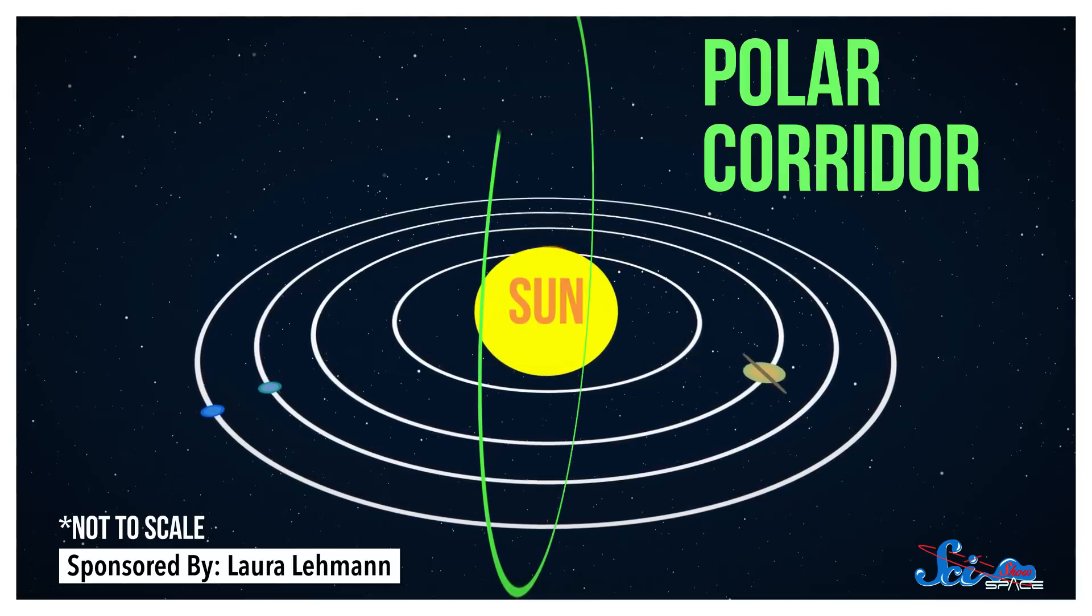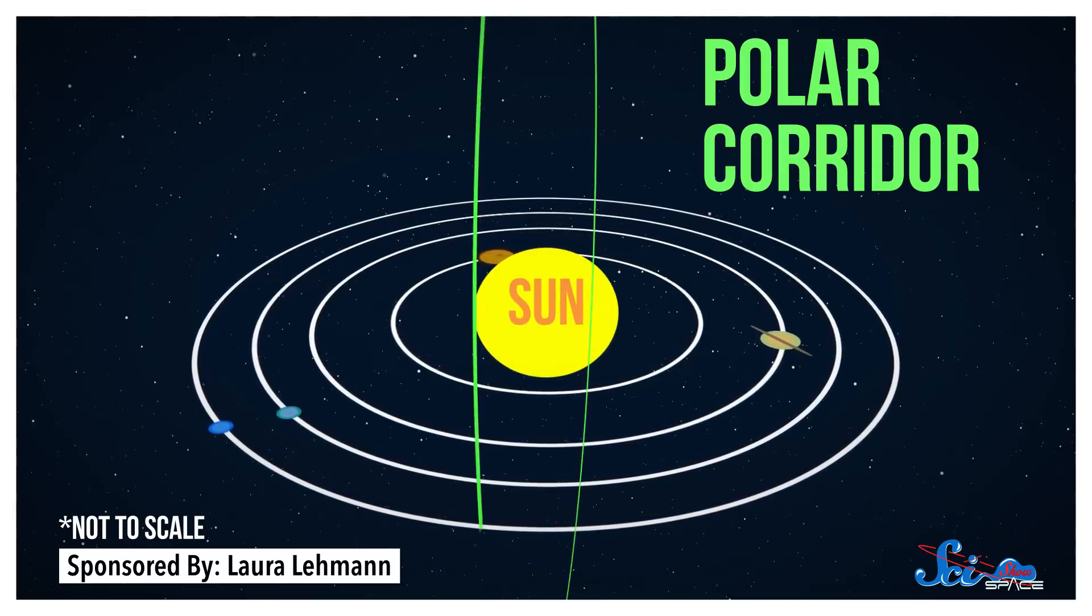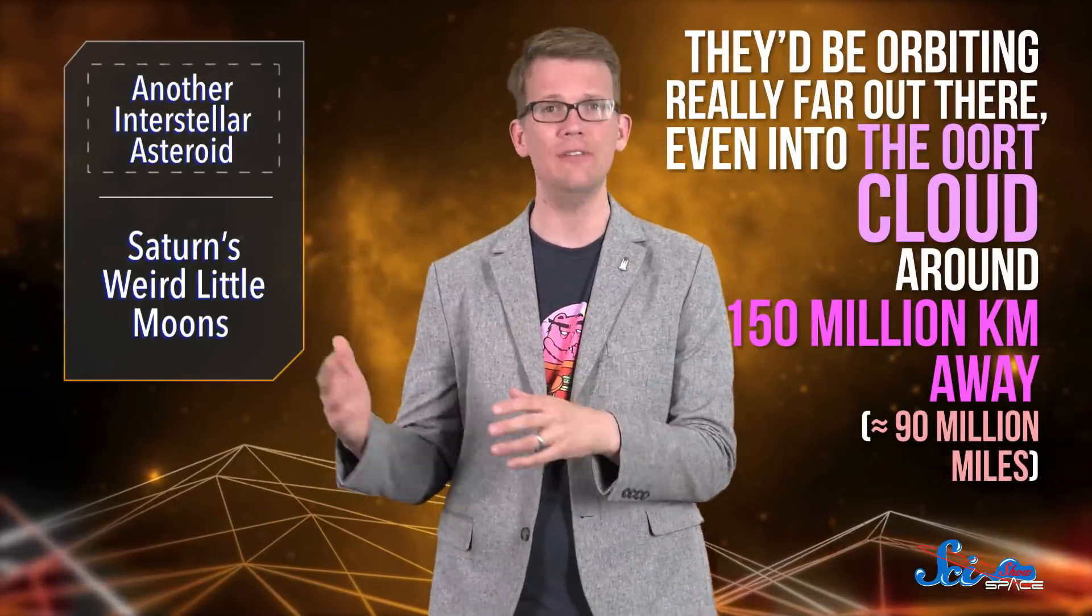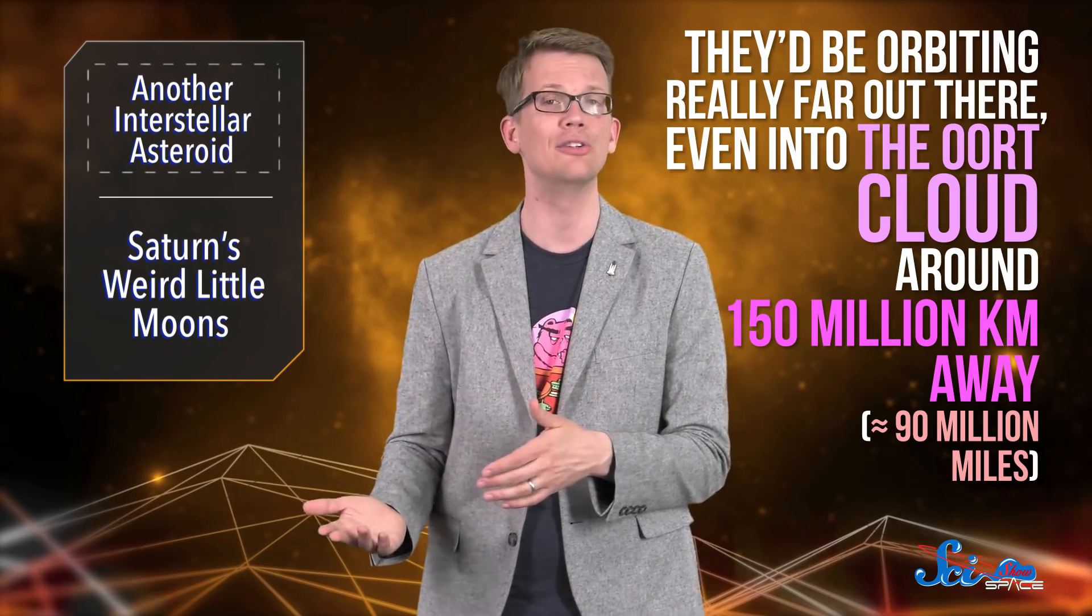If it's real — in more than just math — it would start a long way away from the Sun. So if these objects exist, they'd be orbiting really far out there, even into the Oort cloud, around 150 million kilometers away. And that would help explain why we haven't detected them yet. They'd be really hard to see.